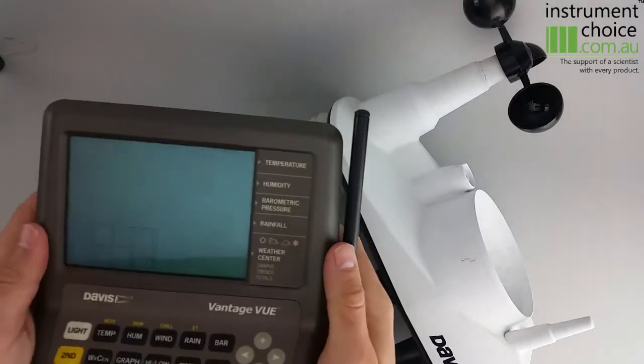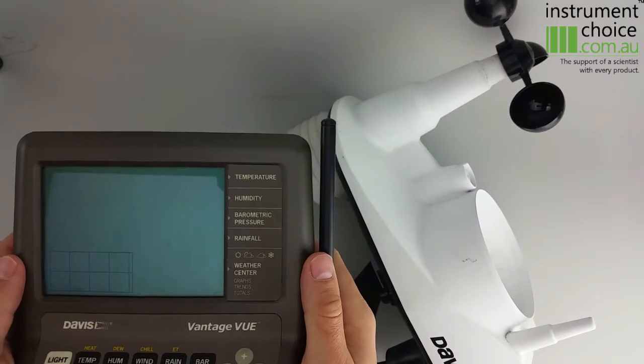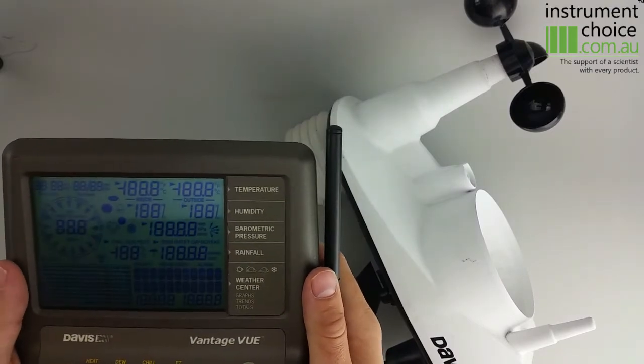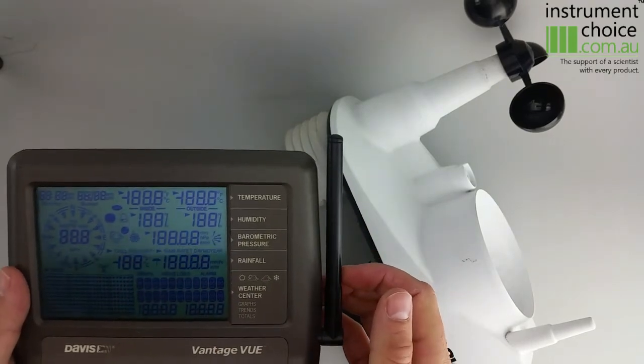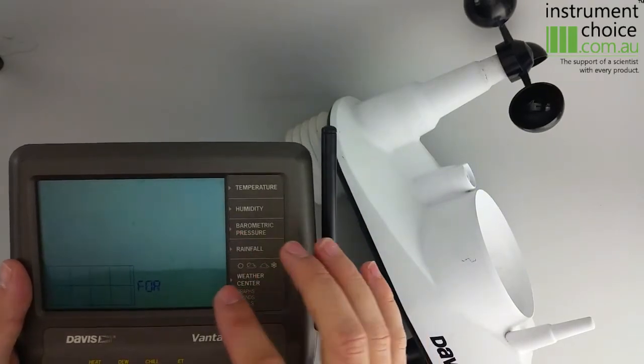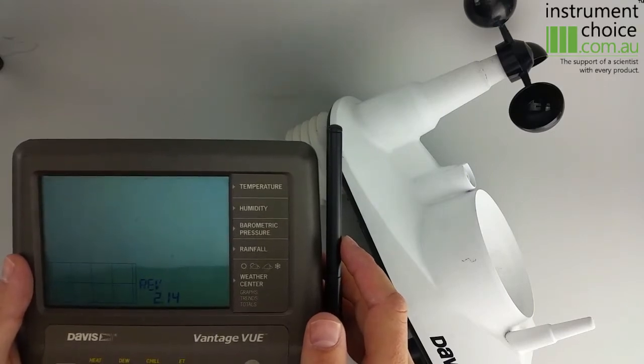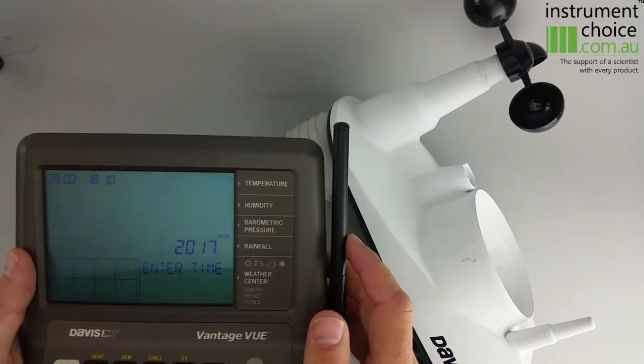When you initially power up the console, you'll hear a few beeps. The console will then power on and show you that it's from Davis Australia, and will then take you into your setup menu.